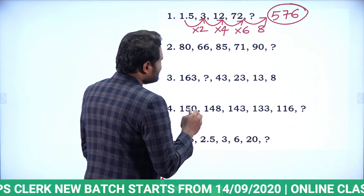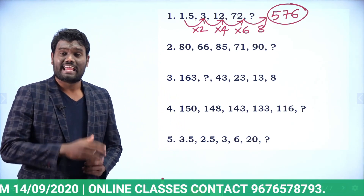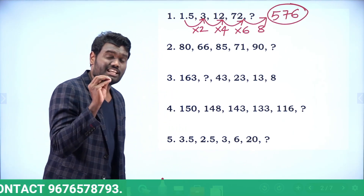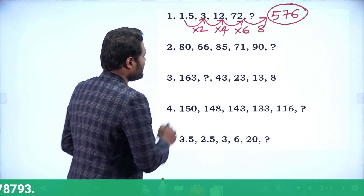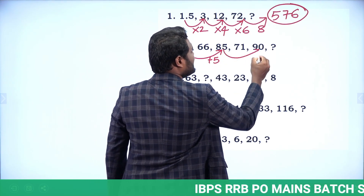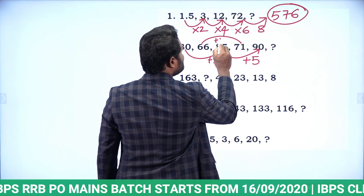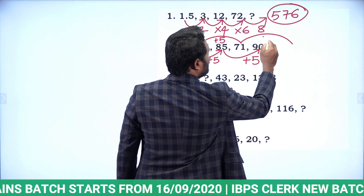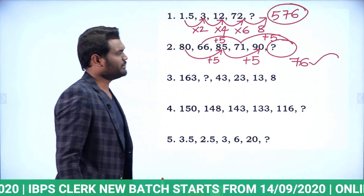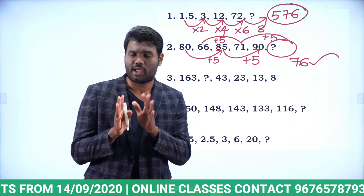Next question: 80, 66, 85, 71, 90, question mark. This series is not gradually increasing or decreasing — it is based on alternate series. In the alternate series: 80 + 5 = 85, 85 + 5 = 90; and 66 + 5 = 71, 71 + 5 = 76. So the answer is 76.